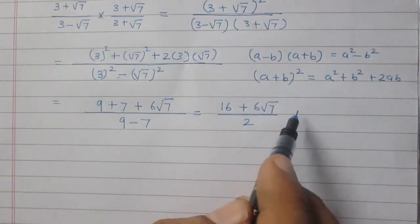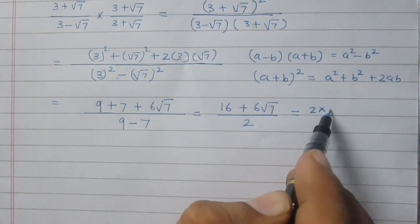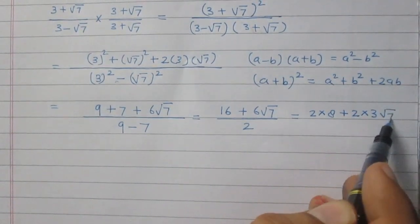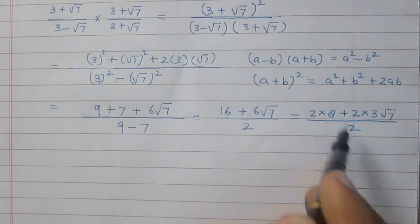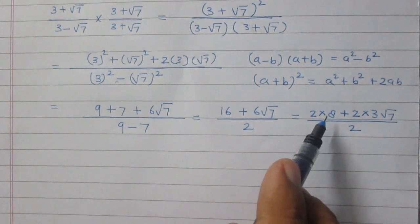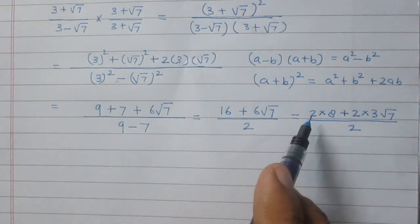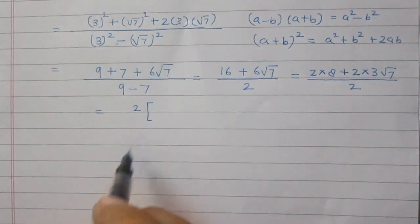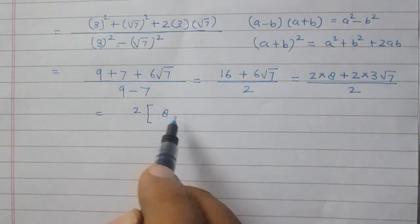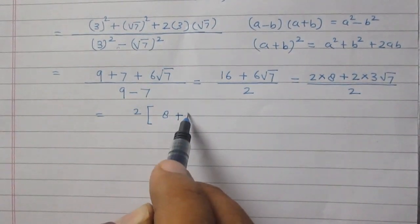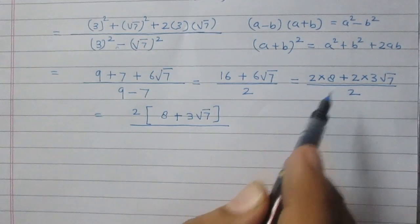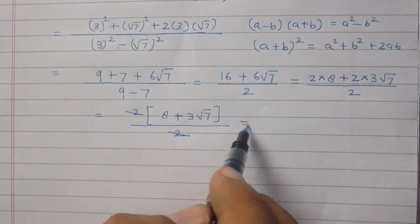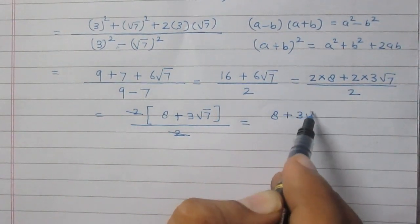We have (16 + 6√7) divided by 2. We can write 16 as 2×8 and 6 as 2×3, so the numerator becomes 2(8 + 3√7), all divided by 2. Both terms in the numerator have 2 as a common factor. The 2 in the numerator cancels with the 2 in the denominator, leaving 8 + 3√7.